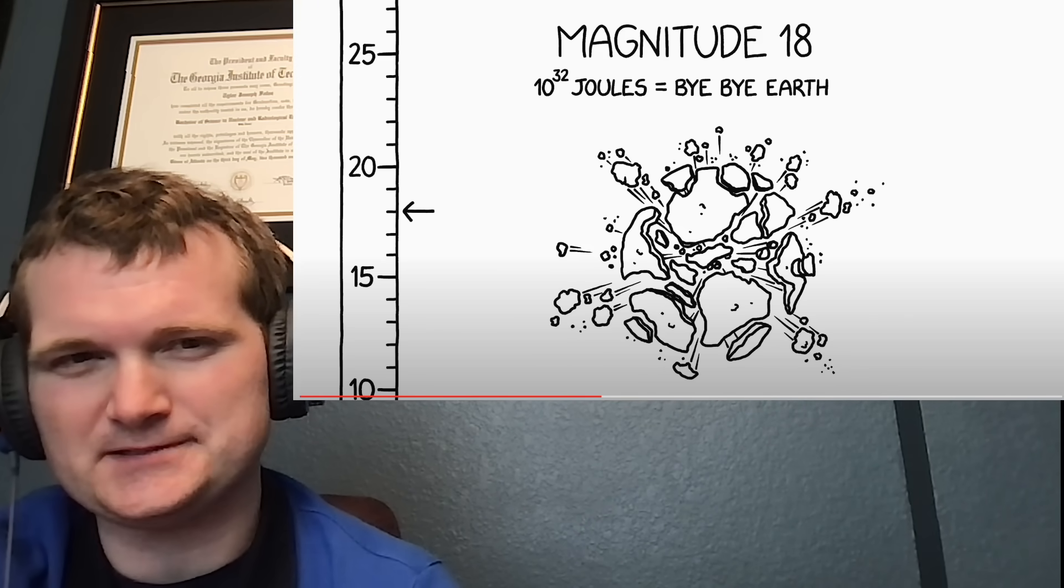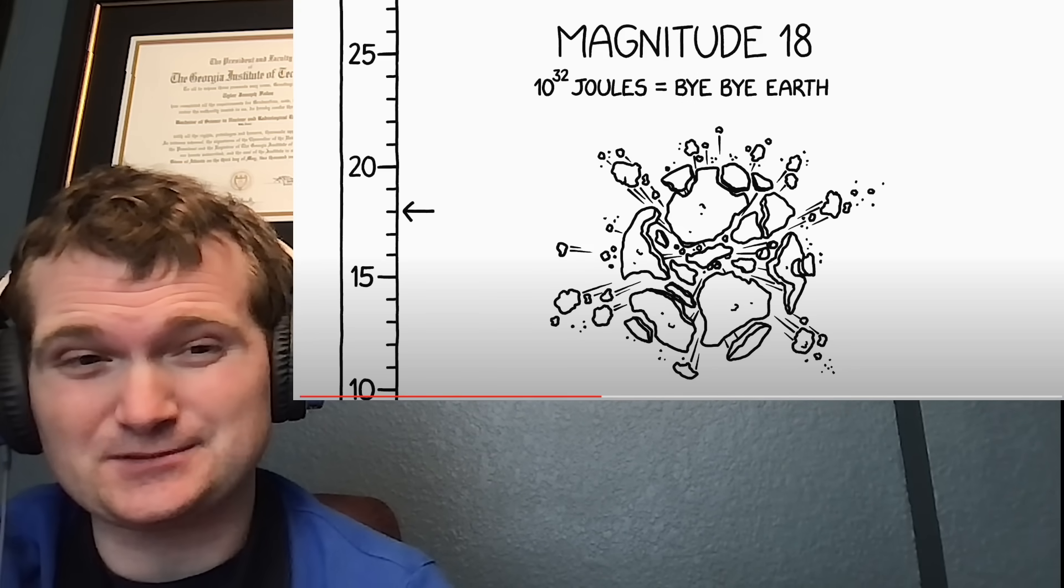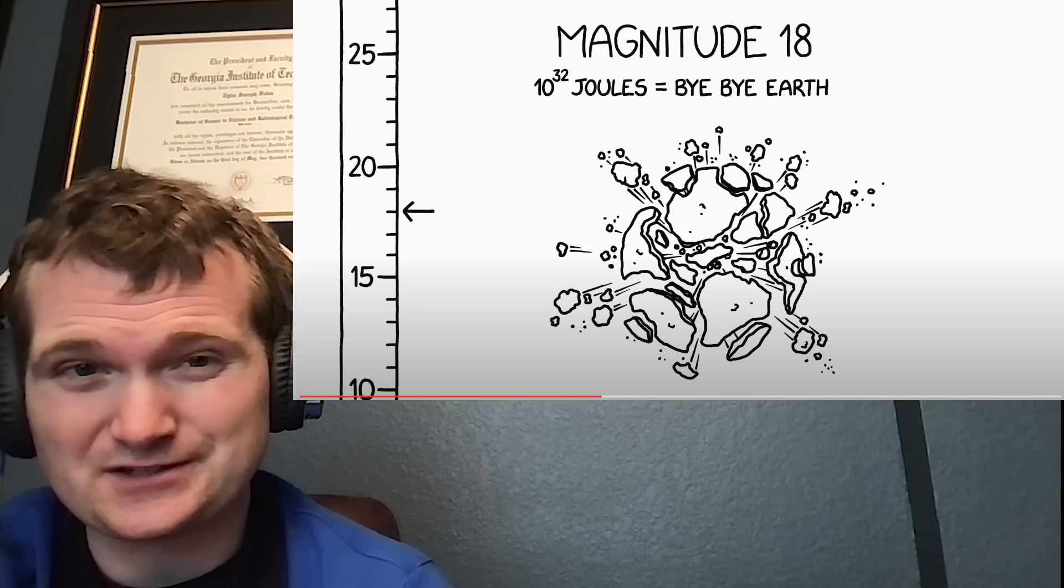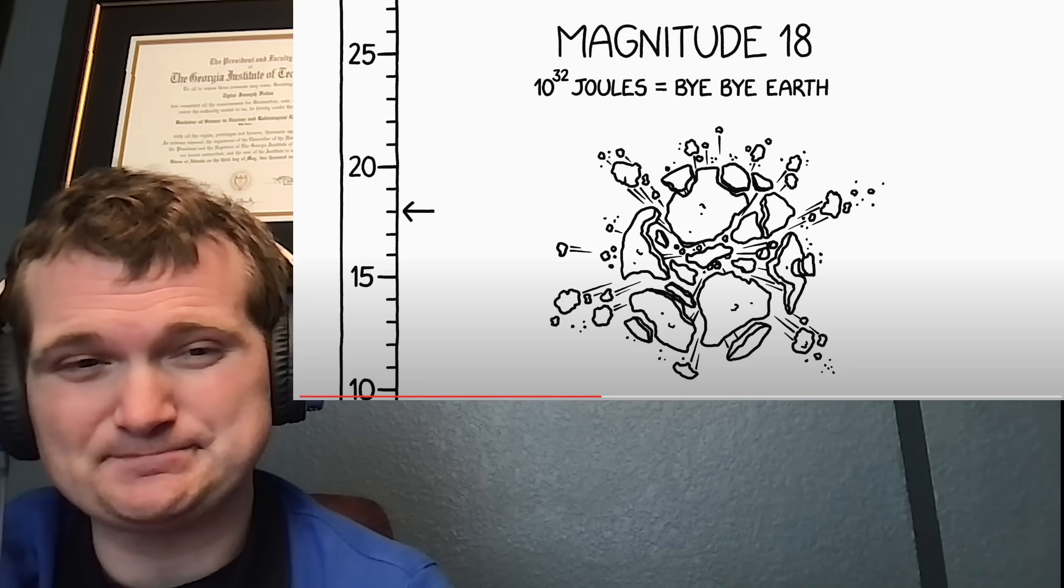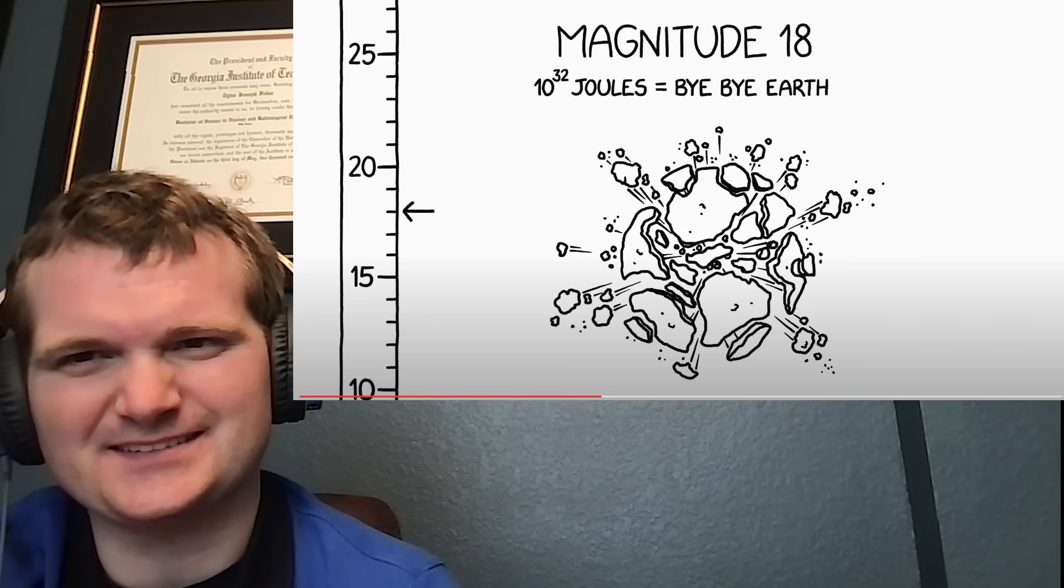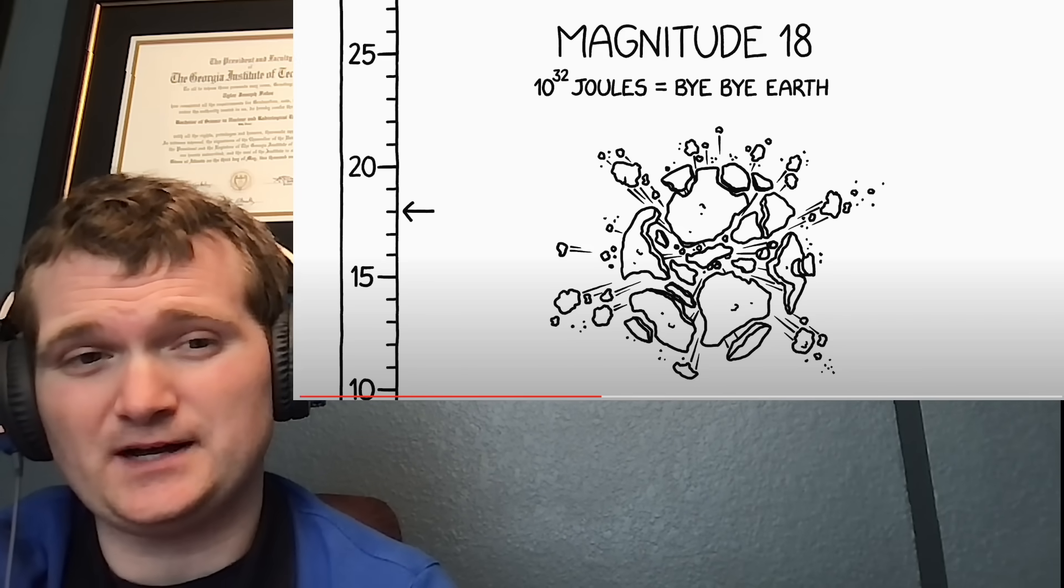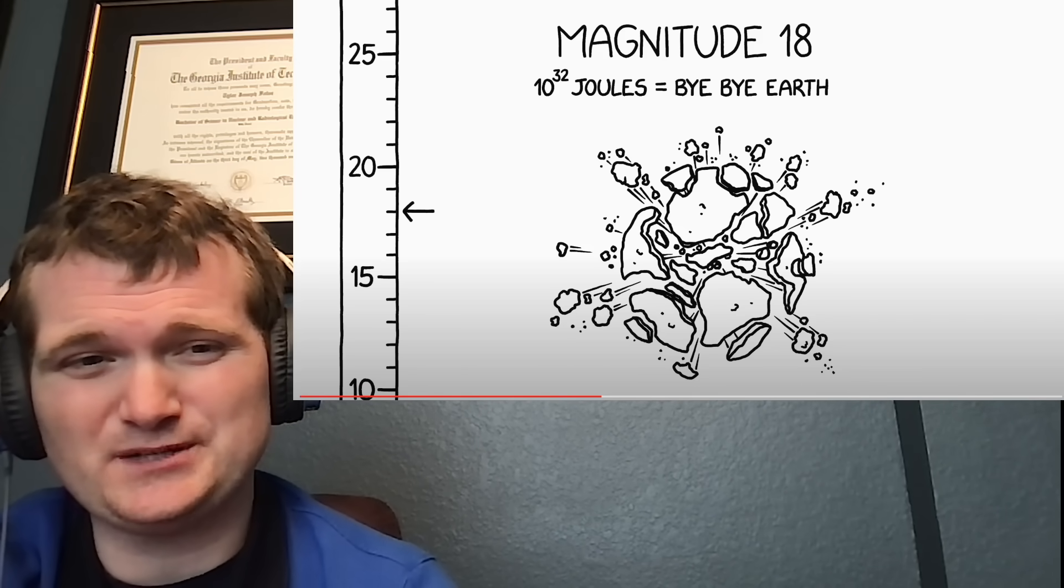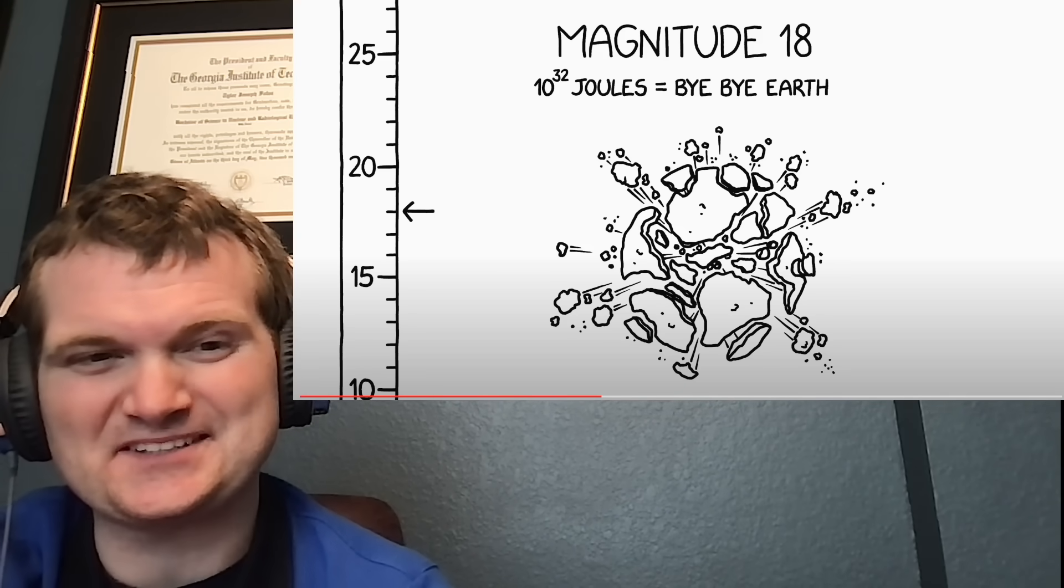And for those of you that are Star Wars fans, the Death Star's main weapon, which considering how quickly it blew apart Alderaan, and assuming Alderaan is similar enough to Earth, is on the order of 10 to the 38 joules or about a 22. It's fun using orders of magnitude like this. To give you a sense of scale, the strongest nuclear bomb, the Tsar Bomba, was a mere 8.3. And Hiroshima and Nagasaki are about a 6.